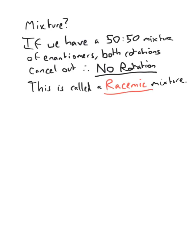Well, what if you have a mixture of enantiomers? Well, if it's a 50-50 mixture of enantiomers, both rotations cancel out and therefore we will not see any rotation. This mixture would be called a racemic mixture. This is important. Learn that term. Racemic. We designate a racemic mixture as a plus-minus or D-L.